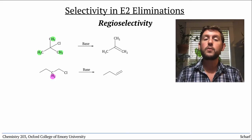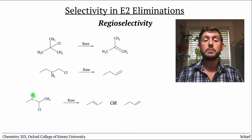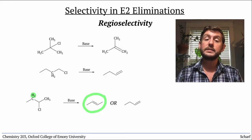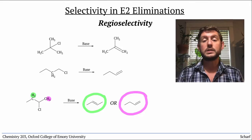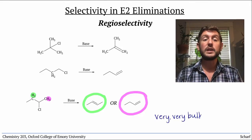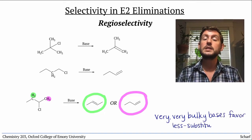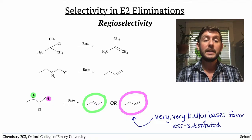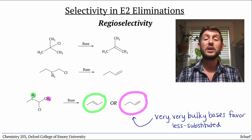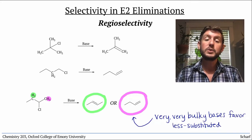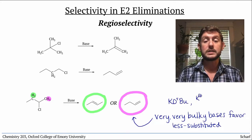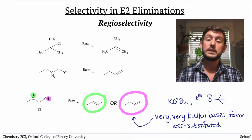But there is a difference for sec-butyl chloride. The more substituted double bond comes from the base acting over here, and the less substituted double bond comes from the base acting over here. Usually the more substituted product is preferred, but if we choose a very, very bulky base, we can shift the selectivity to the less substituted product. This is because the proton that leads to the more substituted product is more sterically encumbered — there's bigger stuff around it — so the big, bulky base has a harder time reaching that site. This is steric hindrance. The most common base for this purpose is potassium t-butoxide, but many other very bulky bases offer similar selectivity.